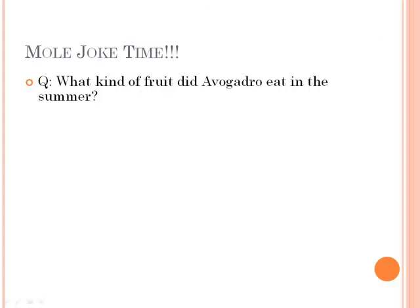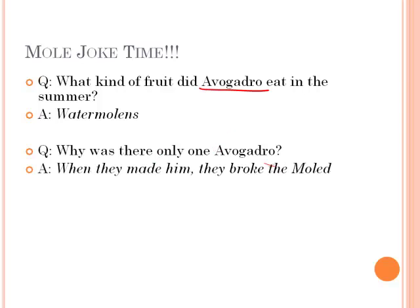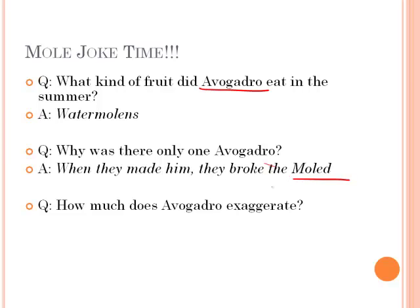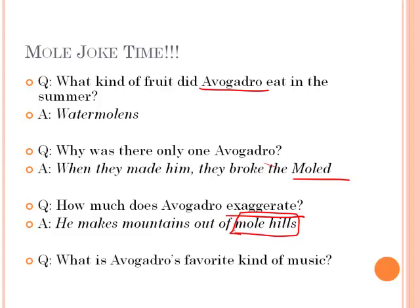First mole joke: What kind of fruit did Avogadro eat in the summer? Remember Avogadro developed the mole — it was water-molens! Why was there only one Avogadro? Because when they made him, they broke the mold! How much does Avogadro exaggerate? He makes mountains out of molehills. And finally, what is Avogadro's favorite kind of music? Rock-and-mole!